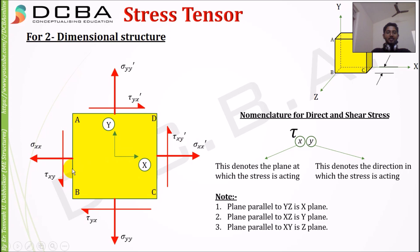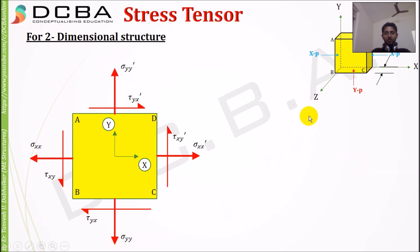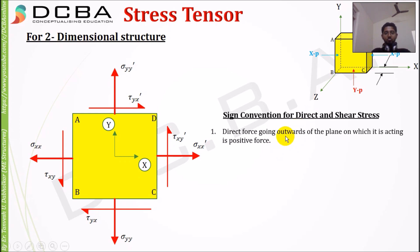For direct stress, sigma_xx: the first letter denotes the plane on which it is acting, and the second letter denotes the direction in which it is acting — similarly for sigma_yy. Now let's look at the sign convention for direct and shear stress.